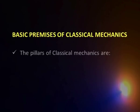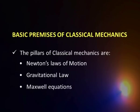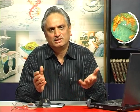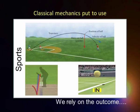The three basic pillars of classical mechanics are Newton's laws of motion, the gravitational law, and Maxwell's equations. These three put together place classical mechanics on a very strong foundation, and on the basis of these, practically most of the things we know of in the macroscopic world could be explained. Let us now take some examples to see how we put classical mechanics into use.